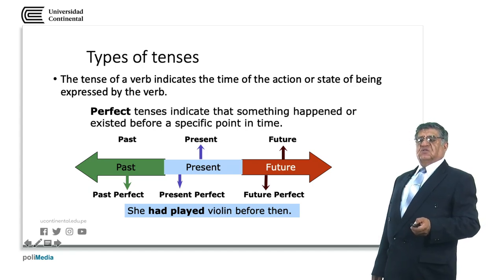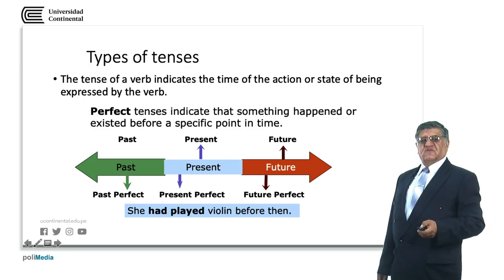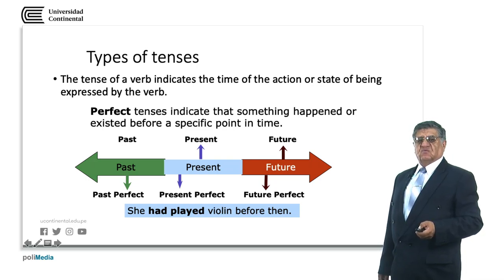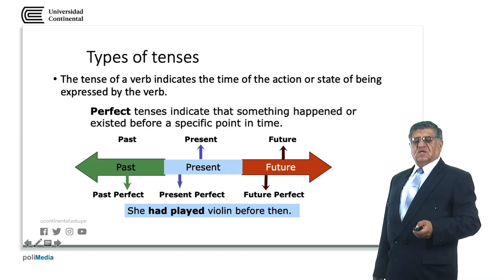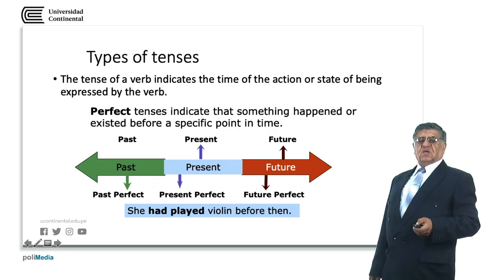The past perfect describes something that happened in a further past, normally before something else described in an additional sentence. We have a timeline at a point in the past that indicates the precedence of the past perfect action. For example: she had played violin before then. Then is a point in the past that, according to the context, is defined. The action described has happened before that known moment.